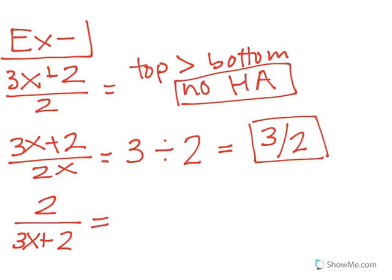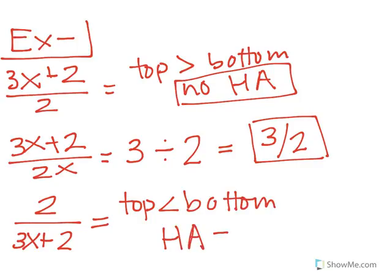Our last one we have again that 2 times x to the 0, so 2 over 3x to the first plus 2. The top is smaller than the bottom. So in this case the horizontal asymptote would be at 0.